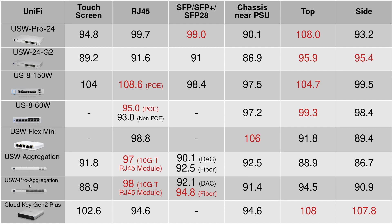Now let's move on to the USW Aggregation switches. One is the non-pro version with only eight ports, and the other is the pro version with 28 SFP+ ports at 10 gigabits and eight SFP28 ports. For these two switches I used three different connection types: RJ45, direct copper, and fiber cable. Normally the RJ45 runs much higher temperature.